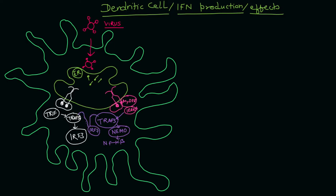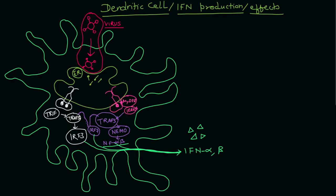There is also a third pathway regulated via both these toll-like receptors, where the TRAF3 molecule will activate IRF7, which will further activate nuclear factor kappa B and cause the production of interferon alpha and interferon beta.